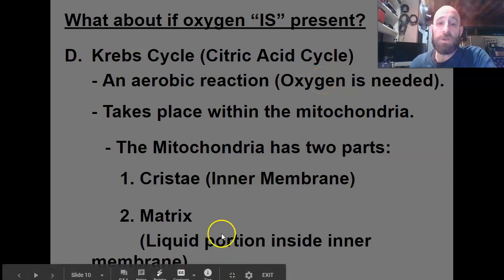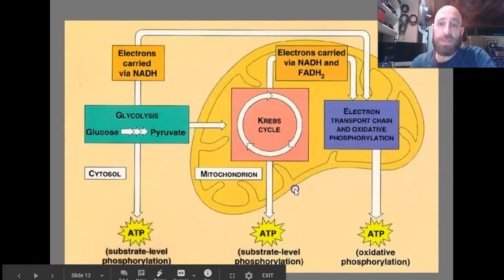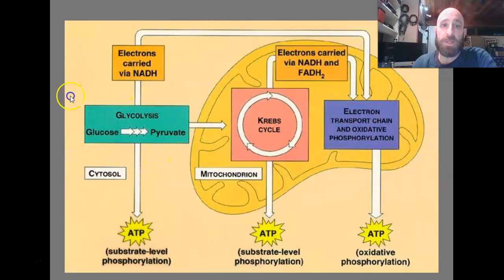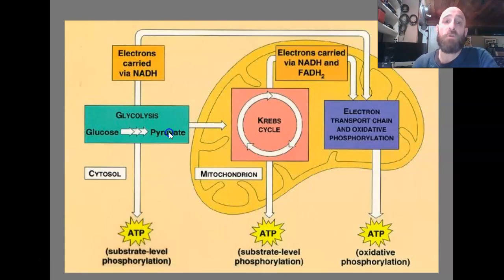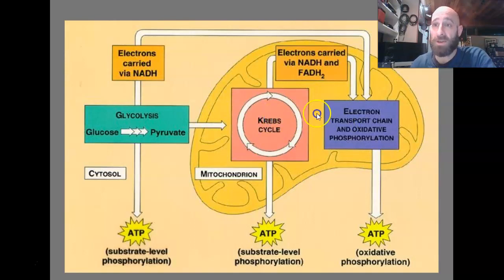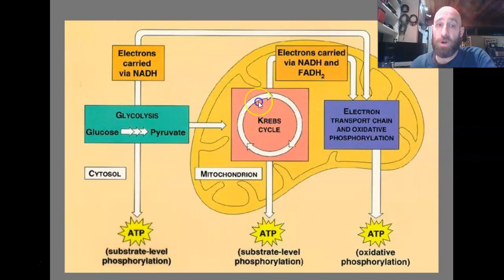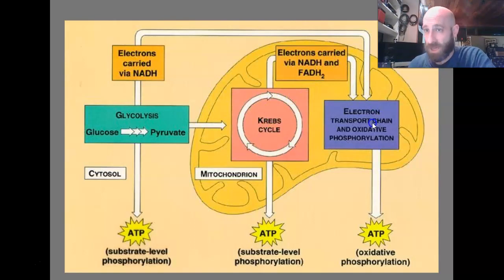The next step is called the Krebs cycle. This diagram shows you what's going on. Outside of the mitochondria, we have glycolysis, which does not require oxygen and makes a little bit of ATP, but not enough to survive off of. The pyruvate then goes into the mitochondria, where there are two different steps. This is similar to photosynthesis — we have a battery charger and an energy maker. The Krebs cycle is the battery charger, and the electron transport chain is the actual energy maker.